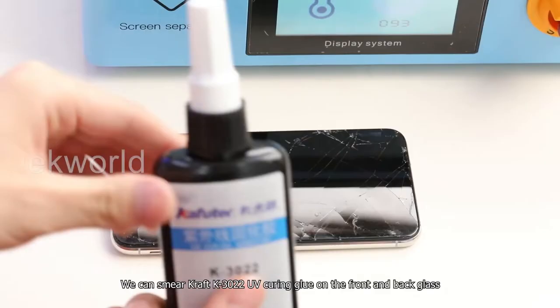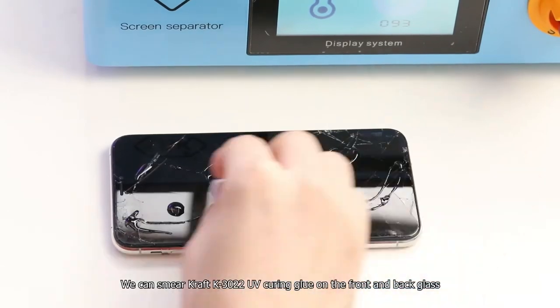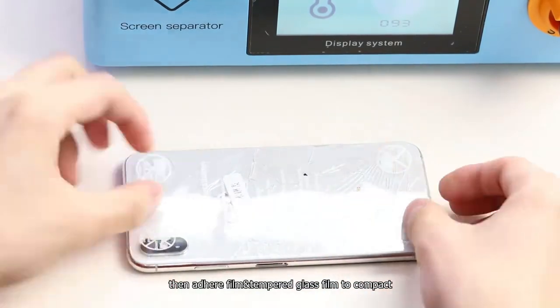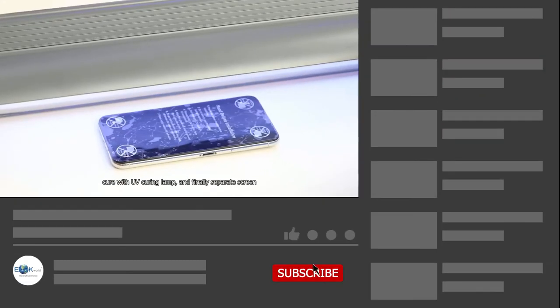We can apply craft K3022 UV curing glue on the front and back glass, then adhere film and tempered glass film to compact. Cure with UV curing lamp and finally separate the screen.